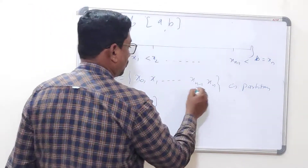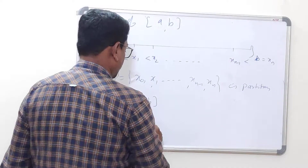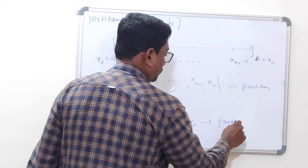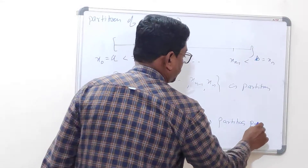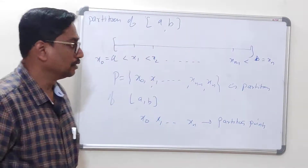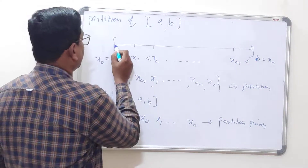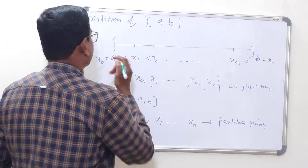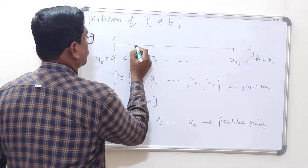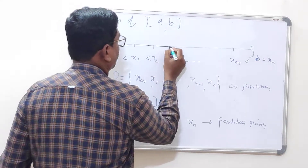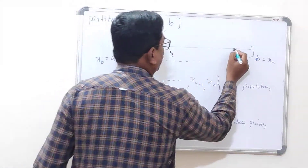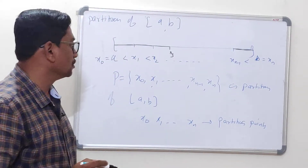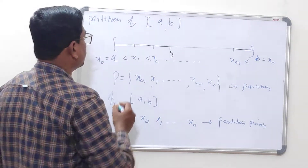The points x₀, x₁, ..., x_n are called partition points. We are making the interval into small parts — the first segment, the second segment, and so on up to the nth segment. These small parts are called the subintervals of the partition.